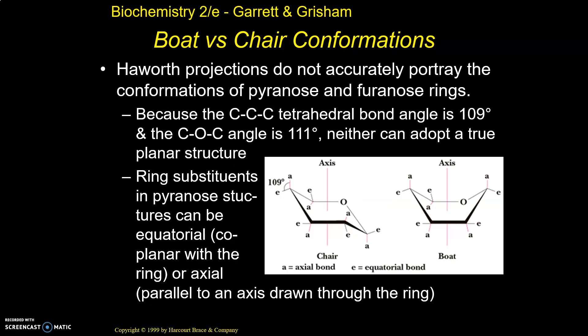These ring structures are not flat. It has to do with the sterics and the bond angles — they're unrealistic and can't adopt a truly planar structure. In reality, six-membered rings are either going to take what we call a chair conformation, where one side of the ring is pointed up and the other side is pointed down — it actually looks like a person sitting in a chair — or they're both pointed in the same direction, which we call a boat conformation. You could think of the chair as kind of like a trans conformation and the boat as kind of like a cis conformation — or more like a hammock.